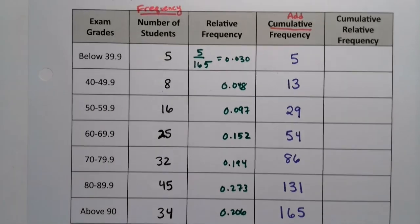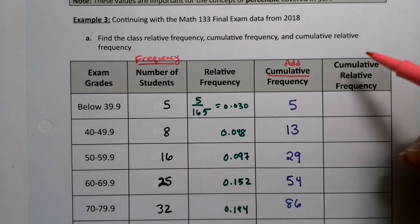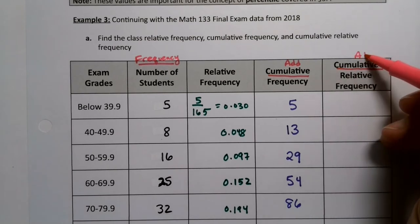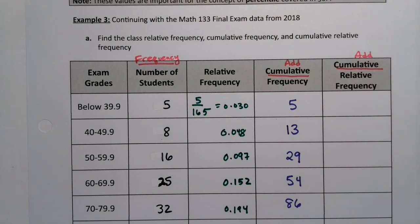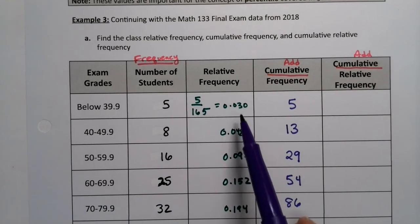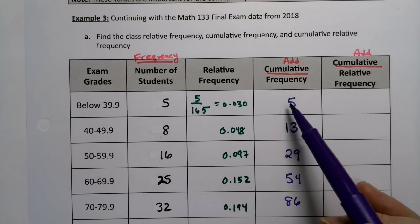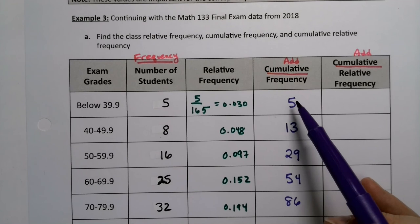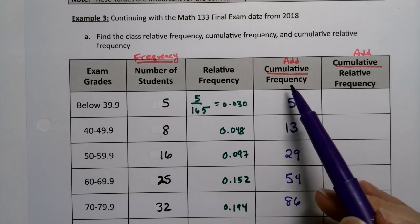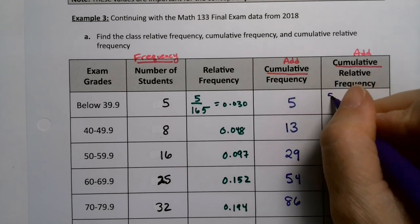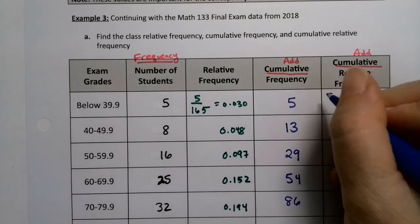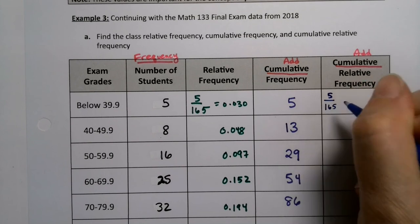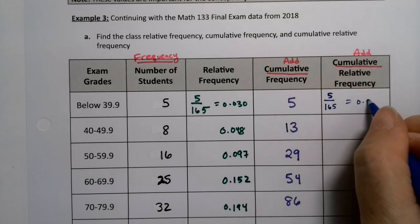Now, what about the cumulative relative frequencies? Well, again, cumulative means to add. But we're going to add up the relative frequencies. Now, you can do that. You can add the decimals and that's fine. But there's an easier way to do this. This right here is the cumulative frequency. So, why don't you just take the cumulative frequency and divide it by the total. 5 divided by 165. Sure. No problem. That's .030.